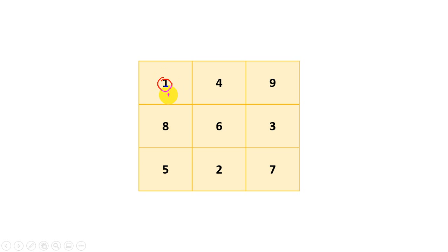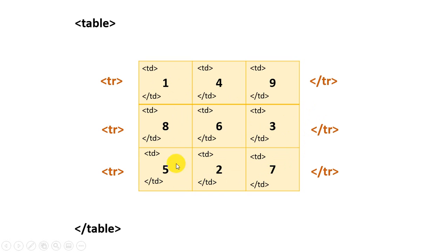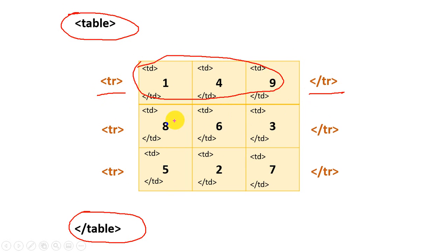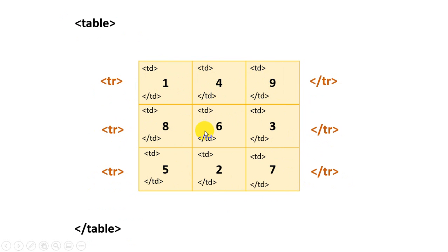Now how to write HTML code for displaying this table: first we have to put a table tag and close it. For each row we have to add tr and closing tr. So for the second row we have to add tr tag and closing tr tag. For the third row we have to add tr tag and closing tr tag. And for each cell you have to put a td tag. That's how you create a table.